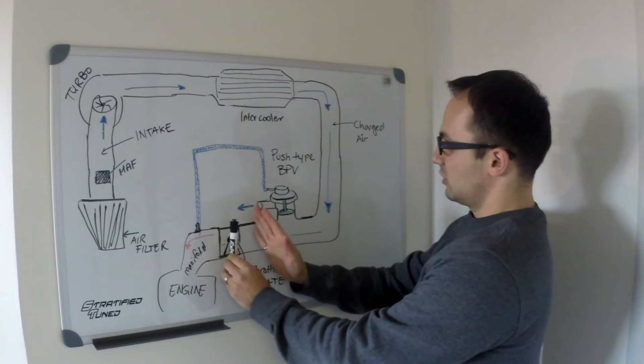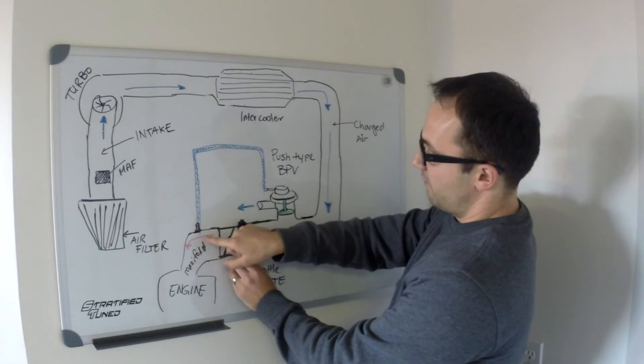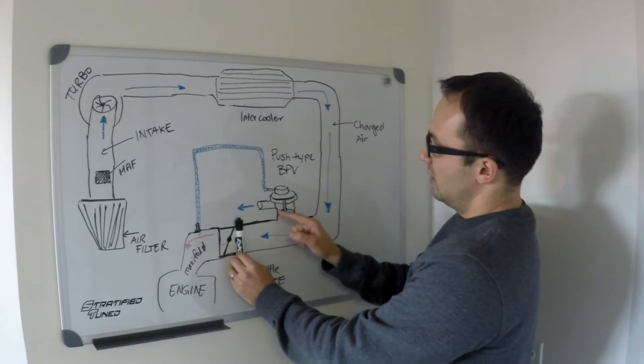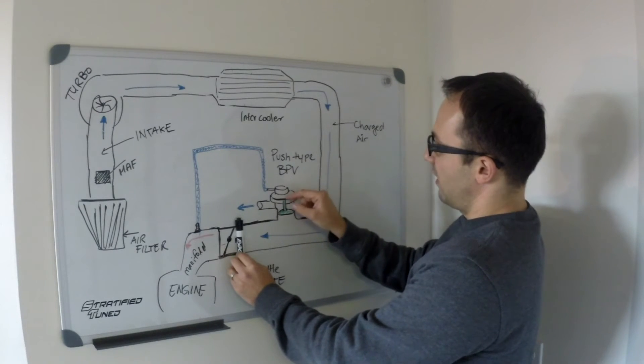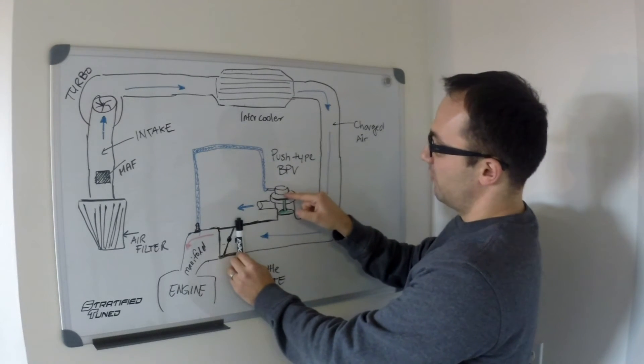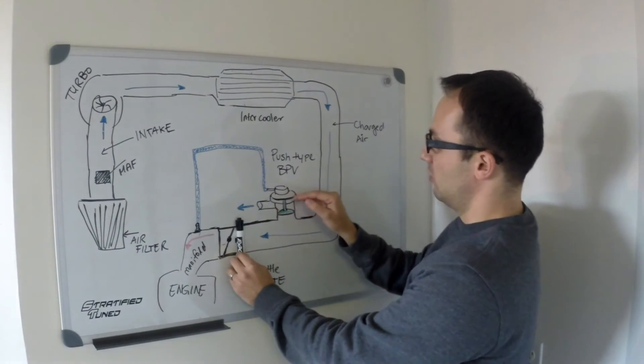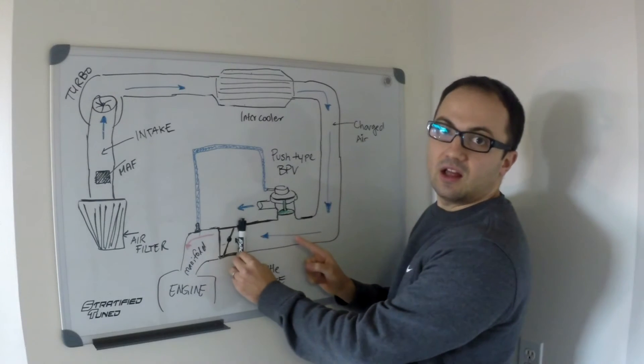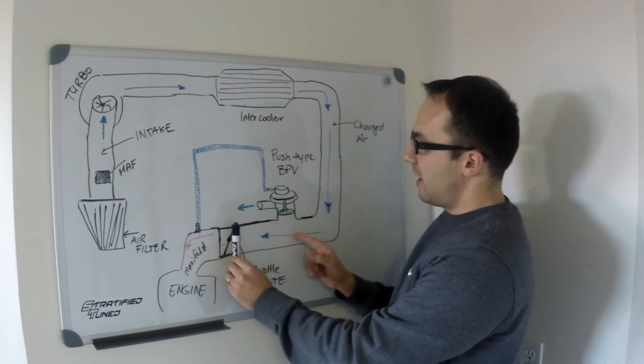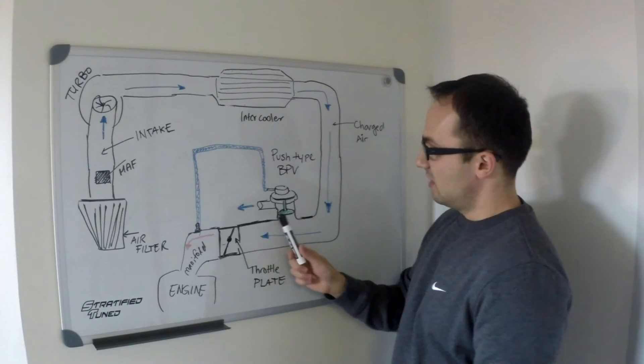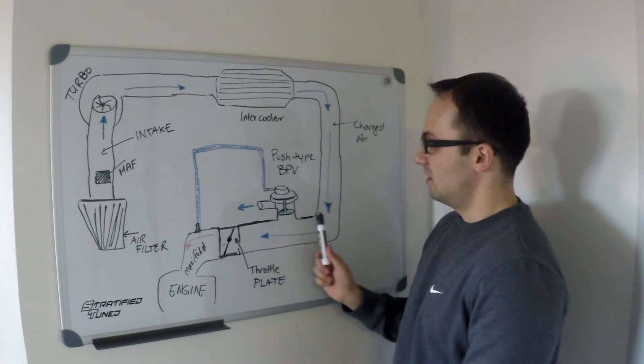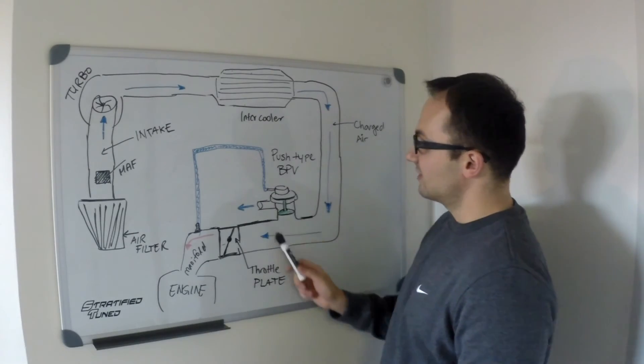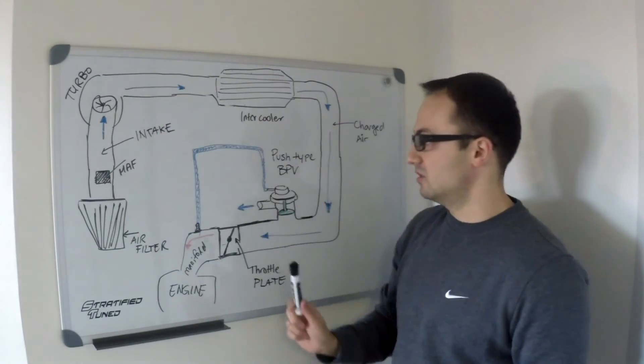So once again, imagine that you've just closed your throttle plate and now you've got vacuum here at the manifold and a lot of pressure here. The diaphragm inside the bypass valve means that this chamber at the very top of the valve will see a lot of vacuum, and this chamber at the bottom of the valve will see a lot of pressure—a lot of boost pressure. That causes a pressure imbalance and that lifts this piston. By lifting the piston, you then allow the excess air—the one that's causing too much pressure and potentially causing surge—to be released.